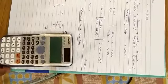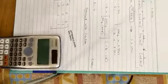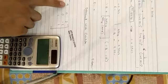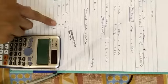Let's see how to use a calculator to calculate a determinant. Let's say we have a matrix: 3, 0, 2, 2, 0, minus 2, 0, 1, 1.